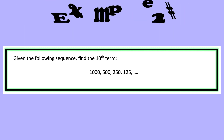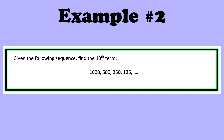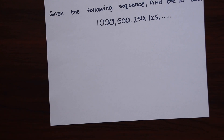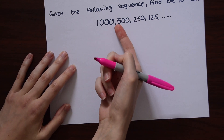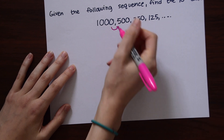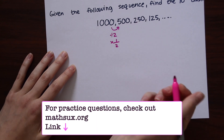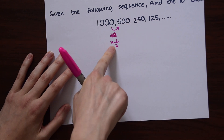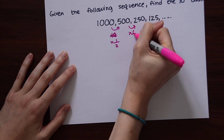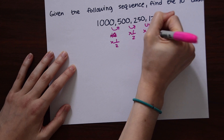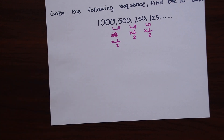Let's look at another example. This time the common ratio is a little bit different — you might notice that the numbers are going down in this sequence instead of going up. The question is: given the following sequence, find the 10th term. We have the sequence 1000, 500, 250, 125. Since the numbers are getting smaller, we have to think about whether we're multiplying or dividing. 1000 divided by 2 gives you 500 — or you could say times one half. So 500 times one half equals 250, and 250 times one half equals 125. You could also think of it as times 0.5.